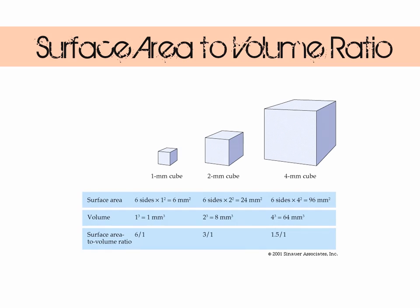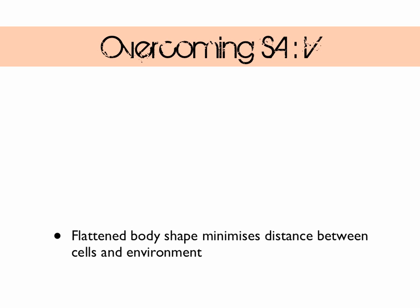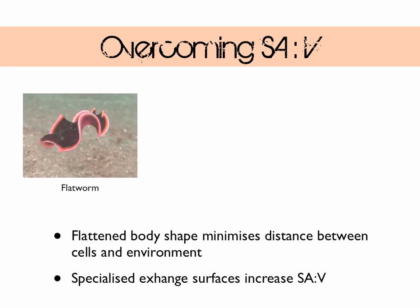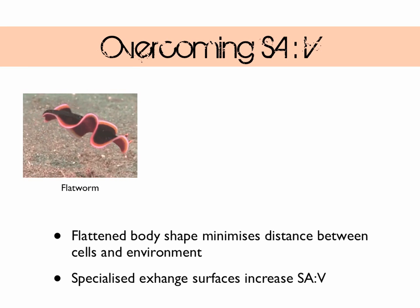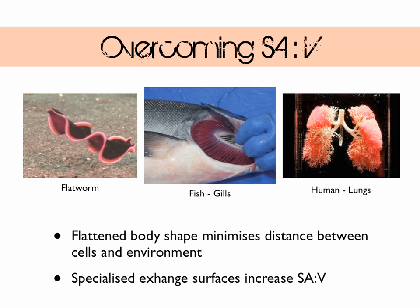So how can the organism overcome this problem? If evolution hadn't found a way around this, life would be very small indeed. Some organisms have developed a flattened body shape to minimise the distance between their cells and the environment. Other more complex organisms have developed specialised exchange surfaces. The flatworm is a great example of the flattened body shape, and the gills of a fish and the lungs of mammals are great examples of the specialised exchange surface.